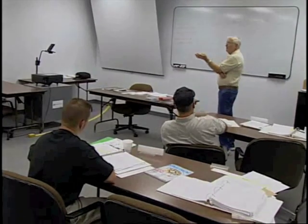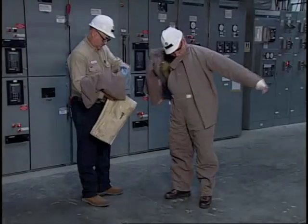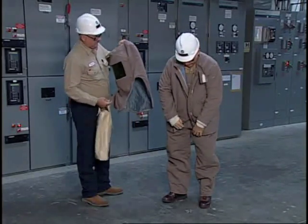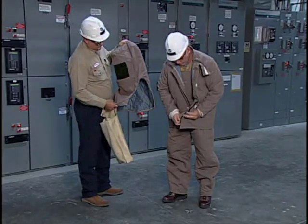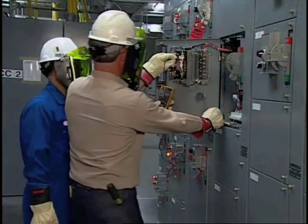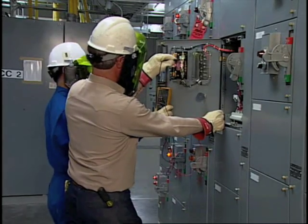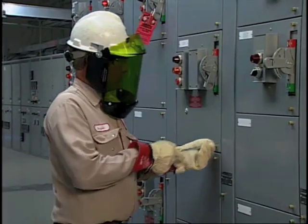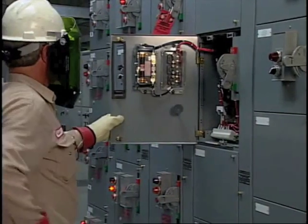The type of training they receive can be either classroom, using programs such as this, or on the job. Personal protective clothing and equipment must be provided and used when work is performed in areas where there are electrical hazards. The equipment must be maintained in a safe and reliable condition and visually inspected before each use. When flame resistant clothing is worn, it must cover all ignitable clothing and allow for movement and visibility. Proper head and eye protection must be worn to prevent injury from electric arcs, flashes, or from flying debris resulting from an electrical explosion.